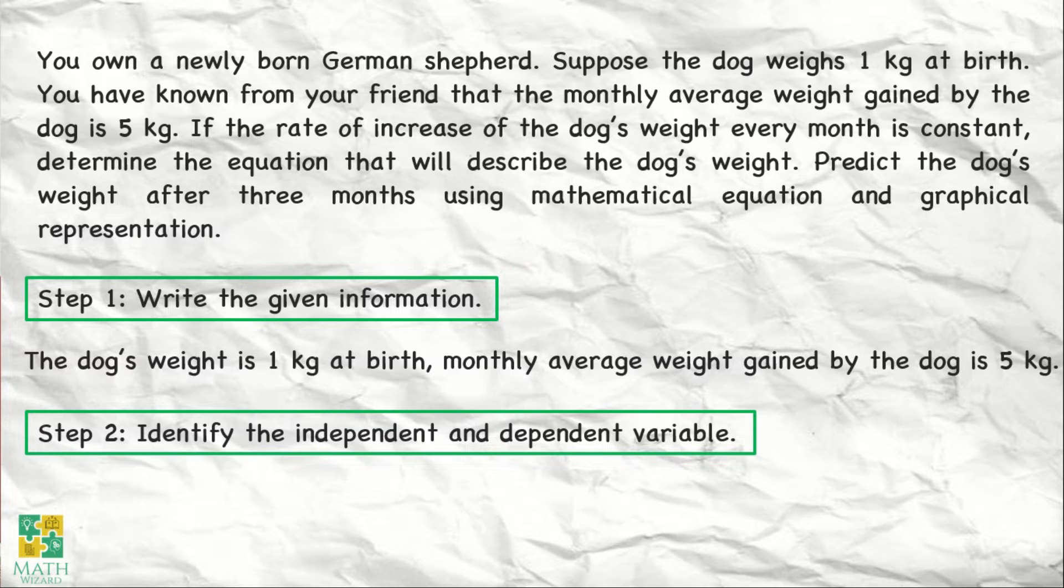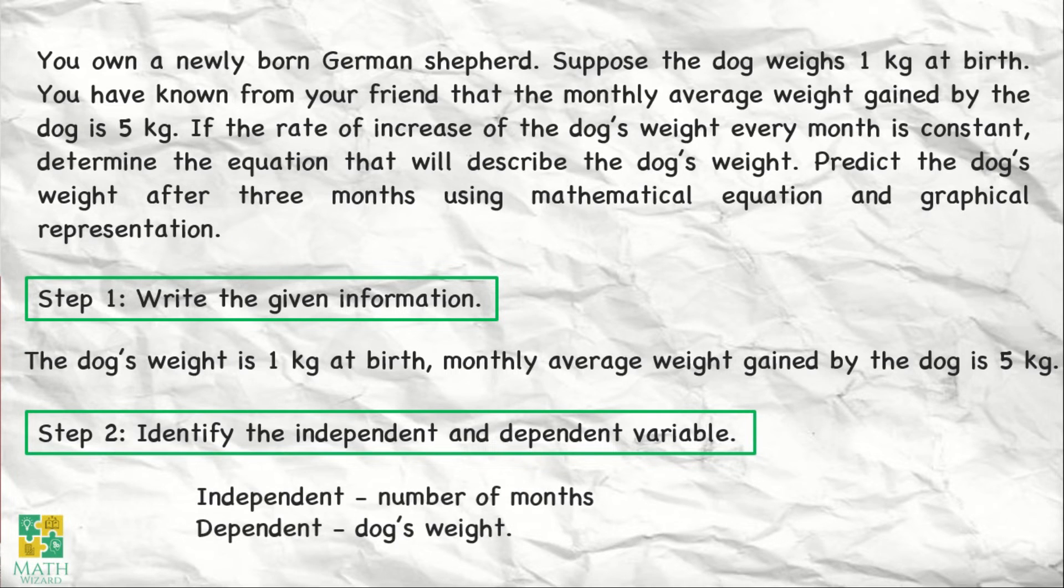For step number 2, kailangan natin i-identify ang independent and the dependent variable. So independent variable is the number of months. Ang dependent naman natin dito ay dog's weight.